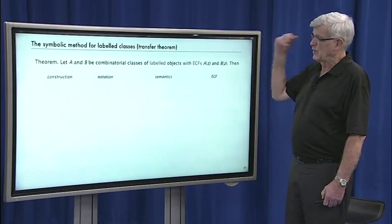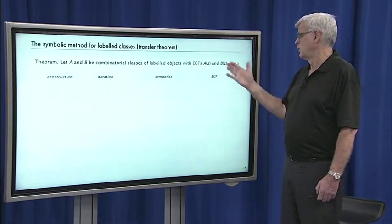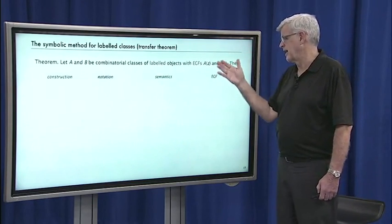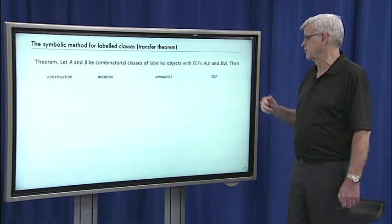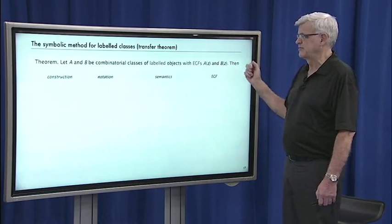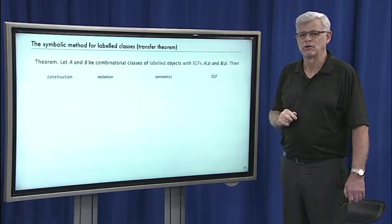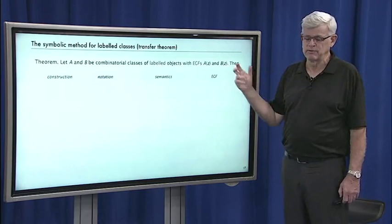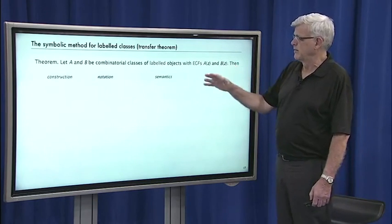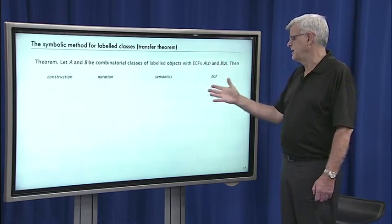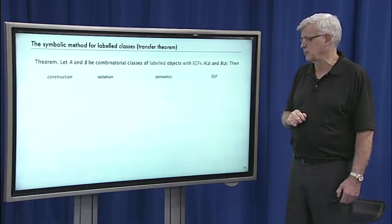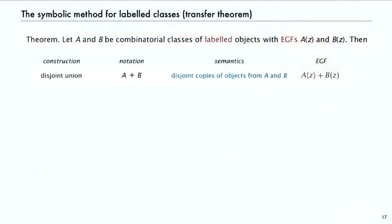More important, we have the symbolic method: if we have the exponential generating functions A(z) and B(z) for the combinatorial classes we're using as part of the construction, then the construction immediately gives us an equation for the exponential generating function — same as for unlabeled. If you take the disjoint union of copies of objects from A and B, then the EGF is the sum.